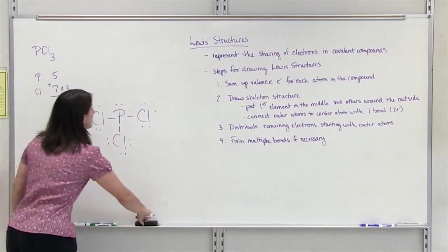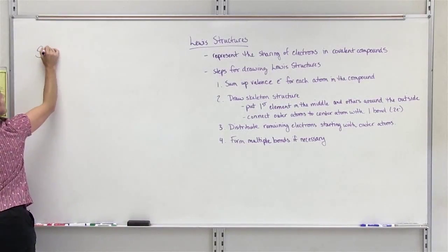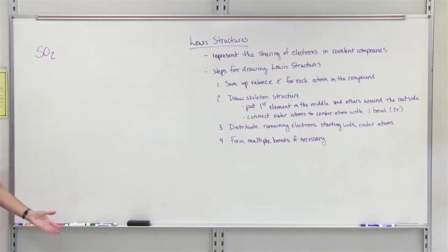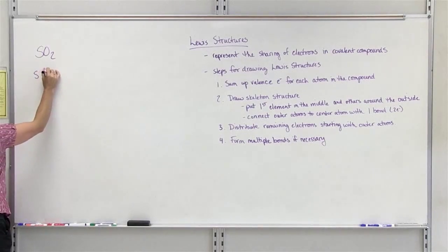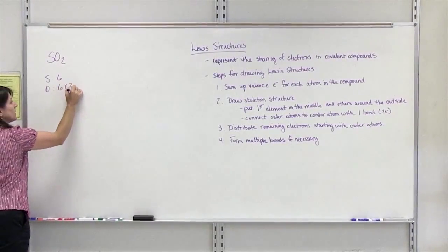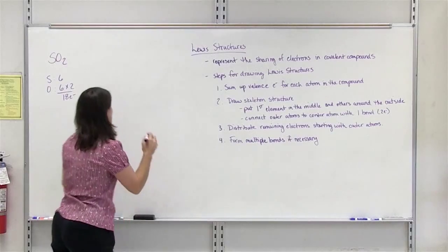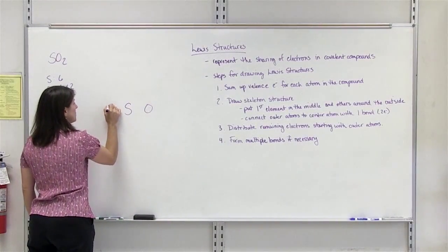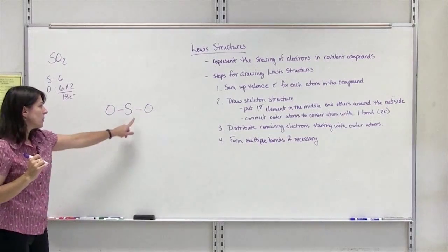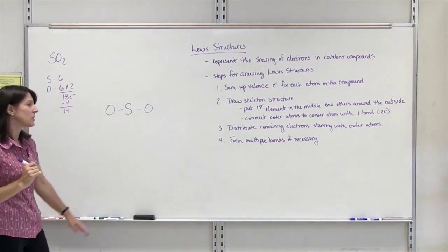We're going to do one more example that takes us down to step 4: SO₂, sulfur dioxide. First step: sum up your valence electrons. Sulfur is in group 6A, so it has 6. Oxygen is in group 6A and has 6, and there are 2 of them. So we have 18 electrons to share. Draw our skeleton structure with S in the center and two O's around the outside, attach each with a bond. We have used 2, 4 electrons so far, leaving 14 electrons remaining.